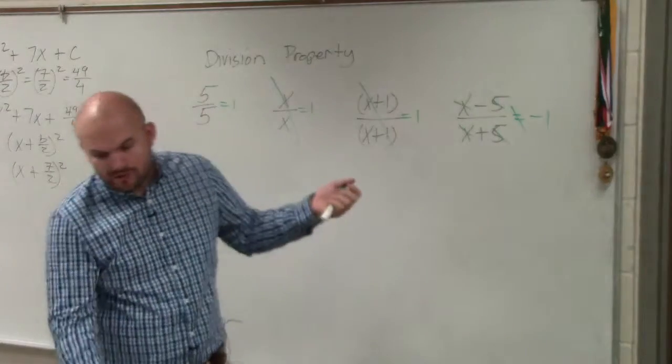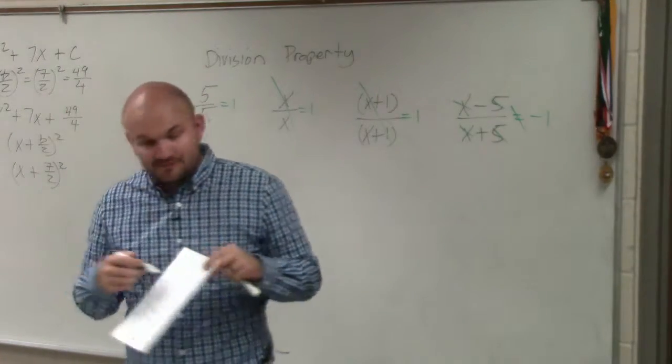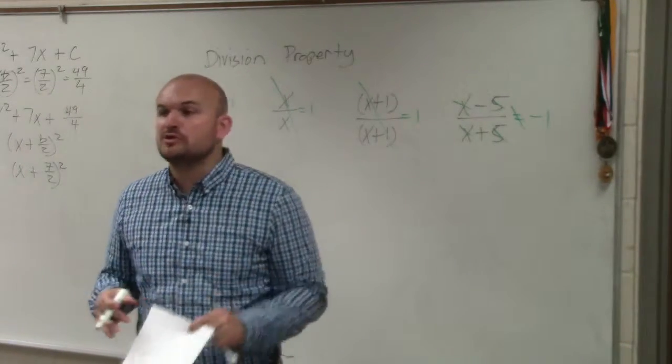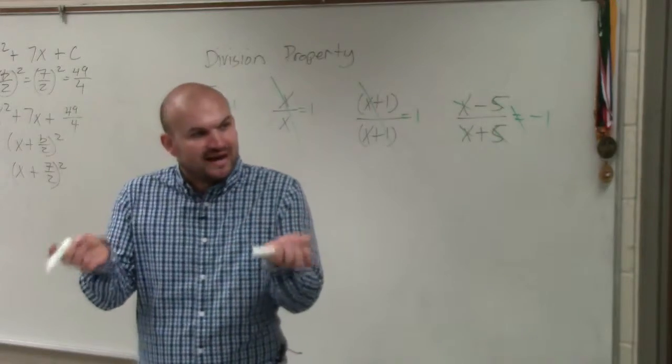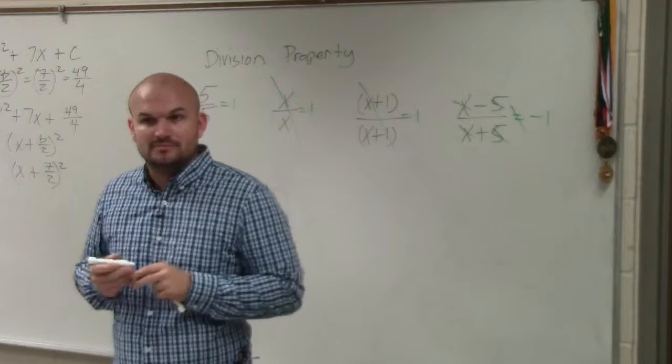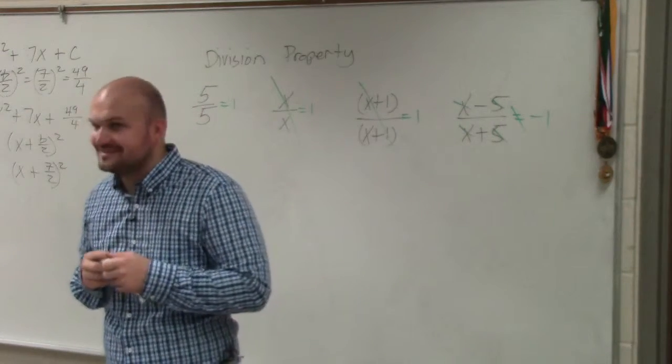So basically, when we're doing simplifying rational expressions, that's all you guys are looking into doing. If you have an expression, you want to put it in its factored form or to simplify it, so therefore you can find quantities that are exactly the same that you can divide to 1. And that's basically the only thing you guys are going to be doing through this, except there's just a lot of factoring.